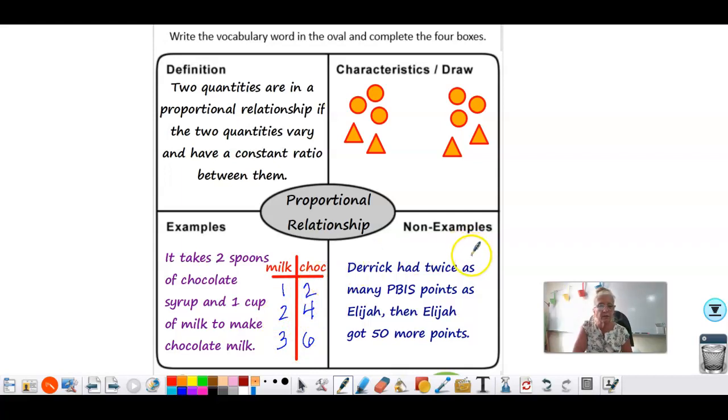A non-example would be a relationship between two amounts that aren't proportional. Imagine Derek had twice as many PBIS points as Elijah, but then Elijah gets 50 more points. Now the ratio between the two boys is no longer the same.